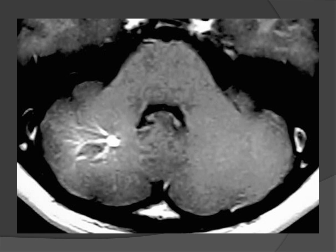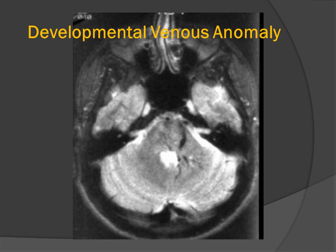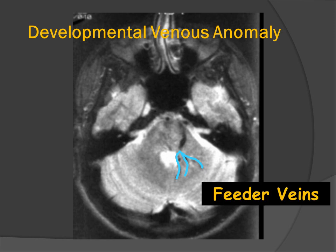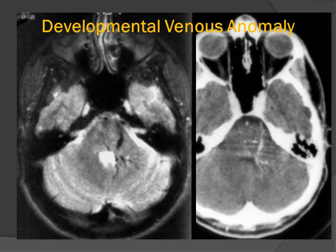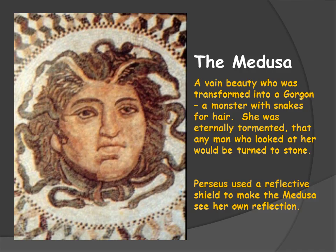Here is a posterior fossa developmental venous anomaly. We can clearly see multiple collector veins draining onto the head of a dominant transcortical or transmantal vein. Here is another posterior fossa DVA — again, multiple collector veins collecting onto the dominant transcortical vein. We may see these lesions on MR as flow voids, on CT as areas of increased attenuation, and there may be enhancement on both MR and CT. But it is the morphologic appearance of smaller veins collecting on a dominant transcortical trunk that is highly characteristic of the developmental venous anomaly.